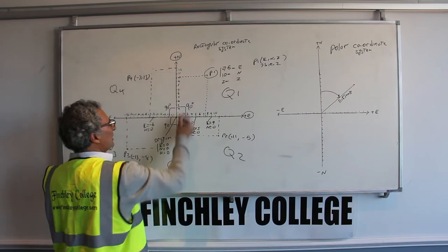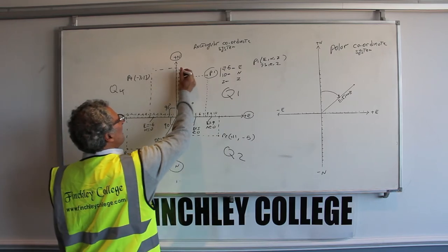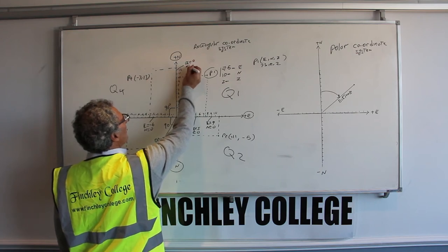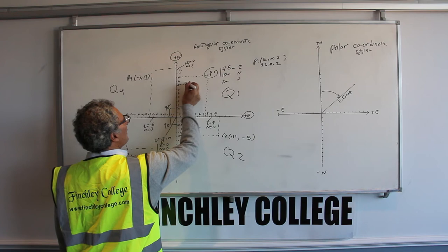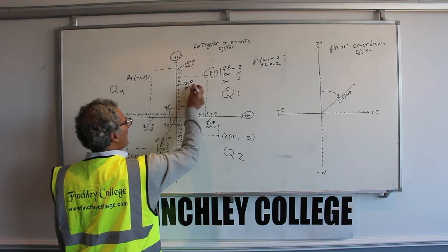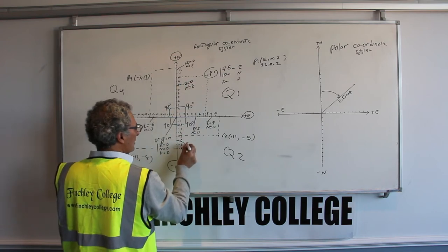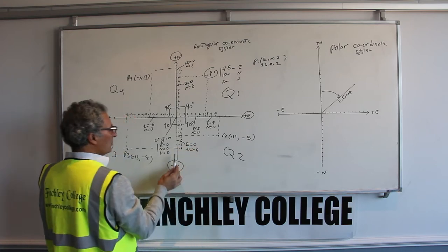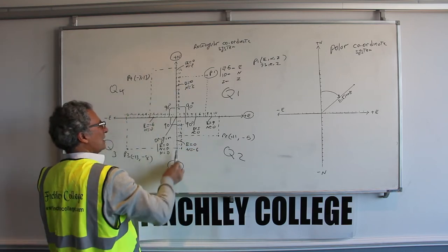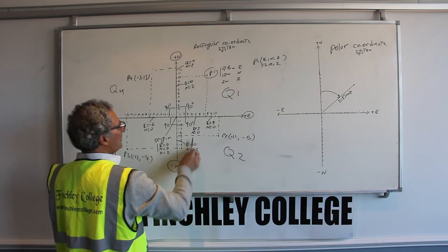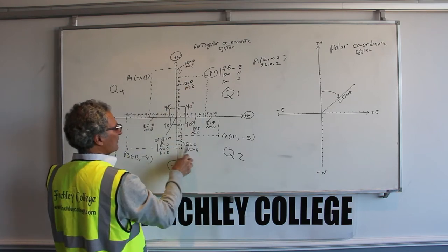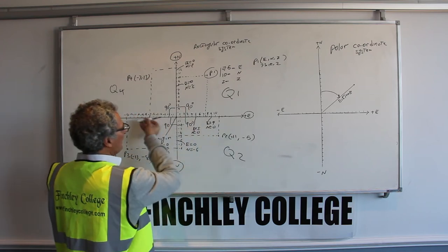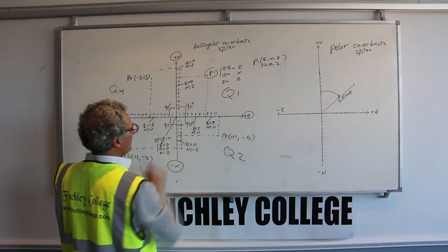Similarly, any point on the north axis will have an easting of zero. So easting 0 northing 12, easting 0 northing 8, easting 0 northing minus 6 — any point on the north axis will have easting zero, and any point on the east axis will have northing zero.